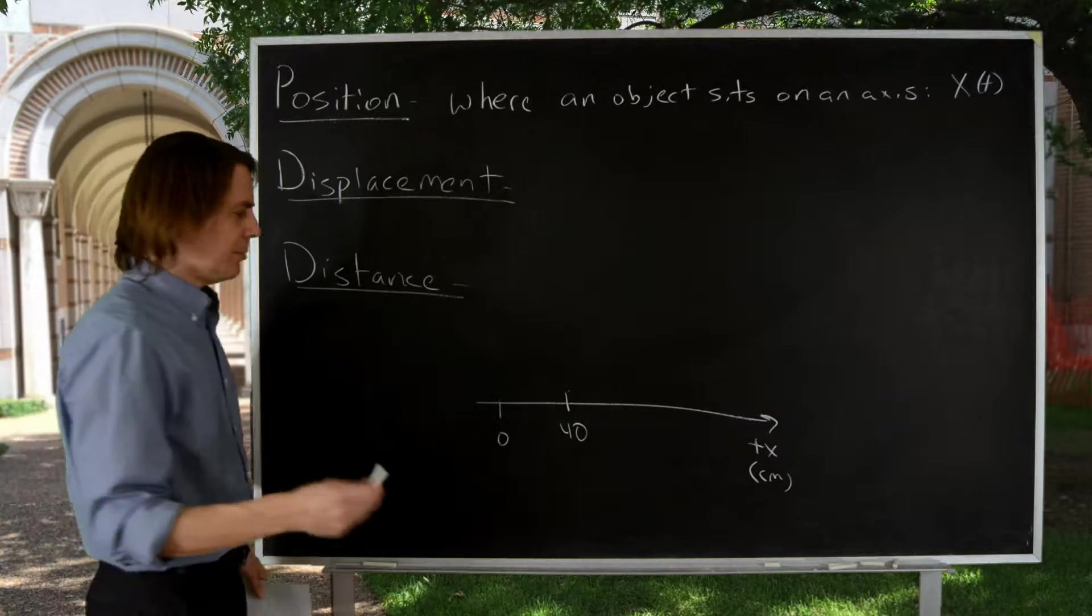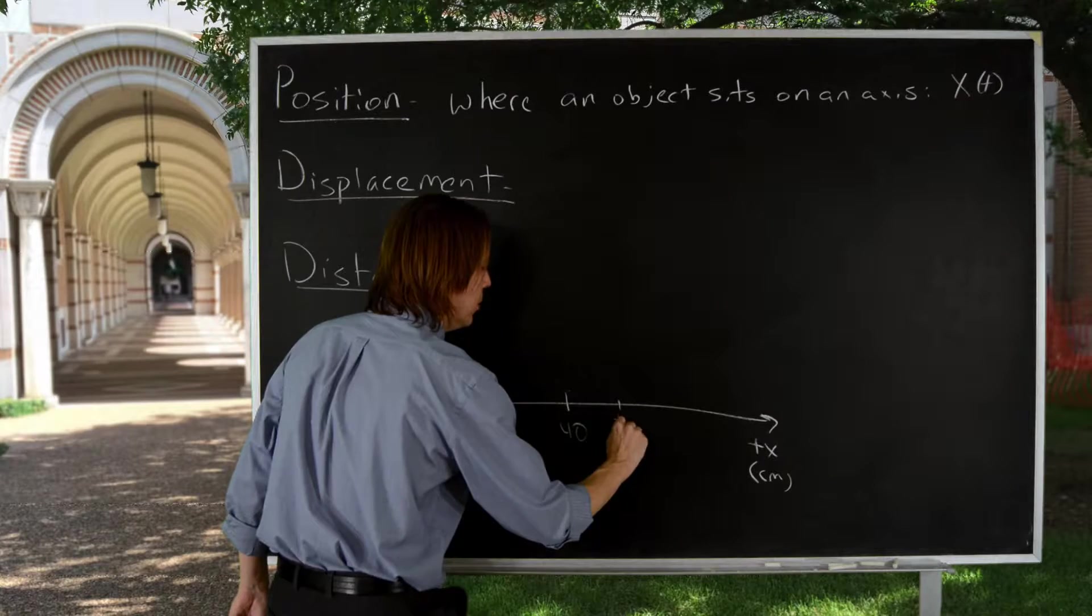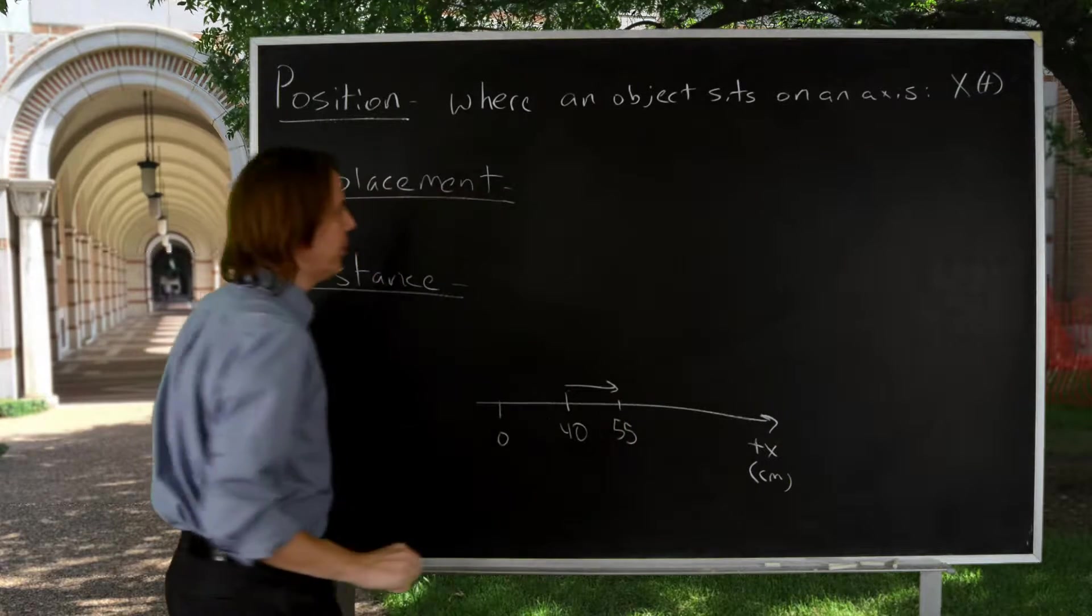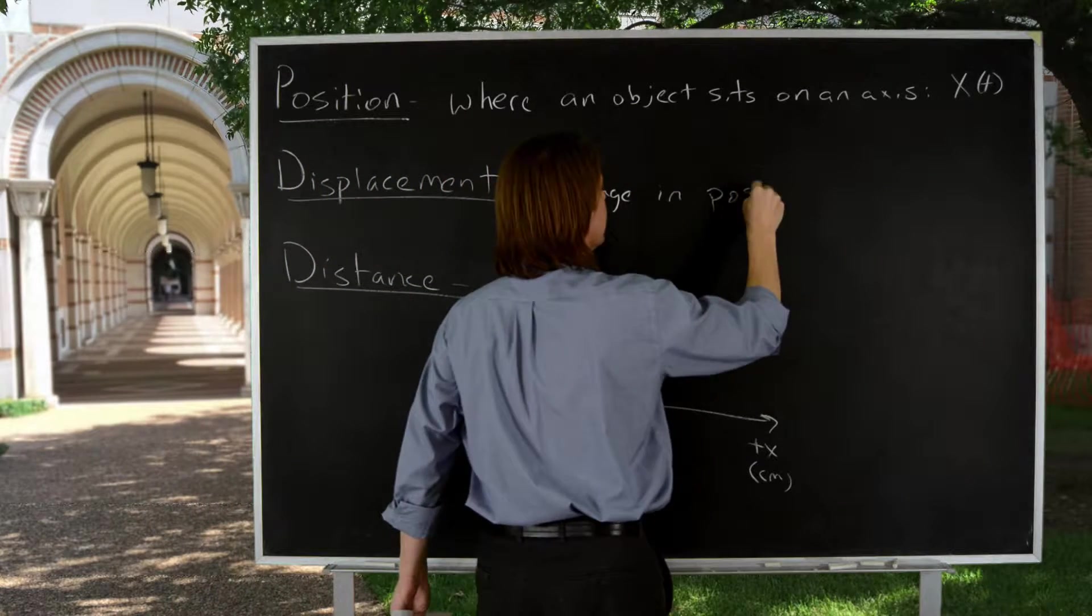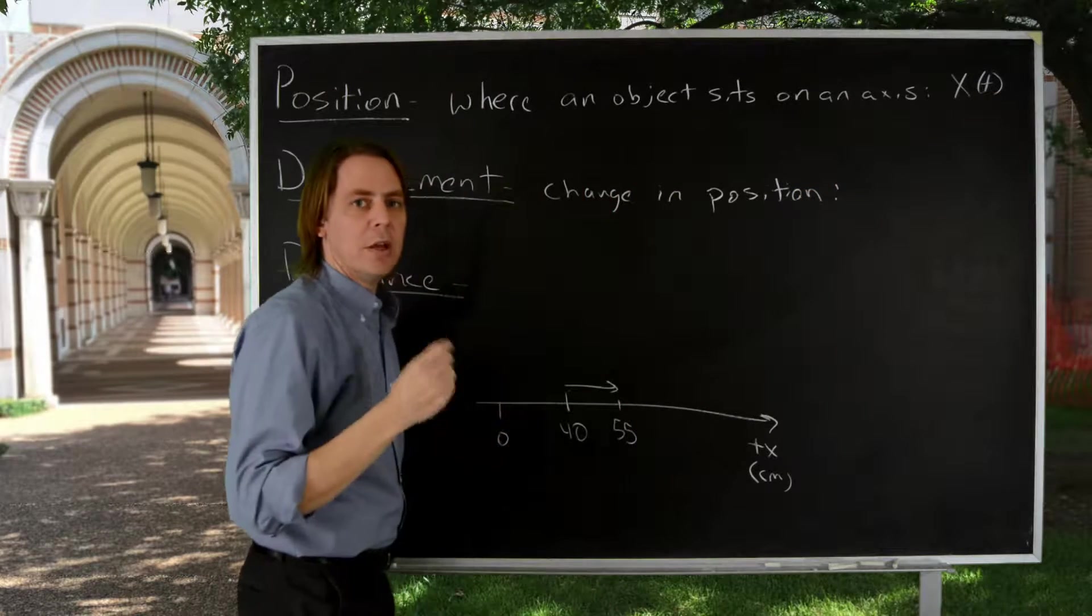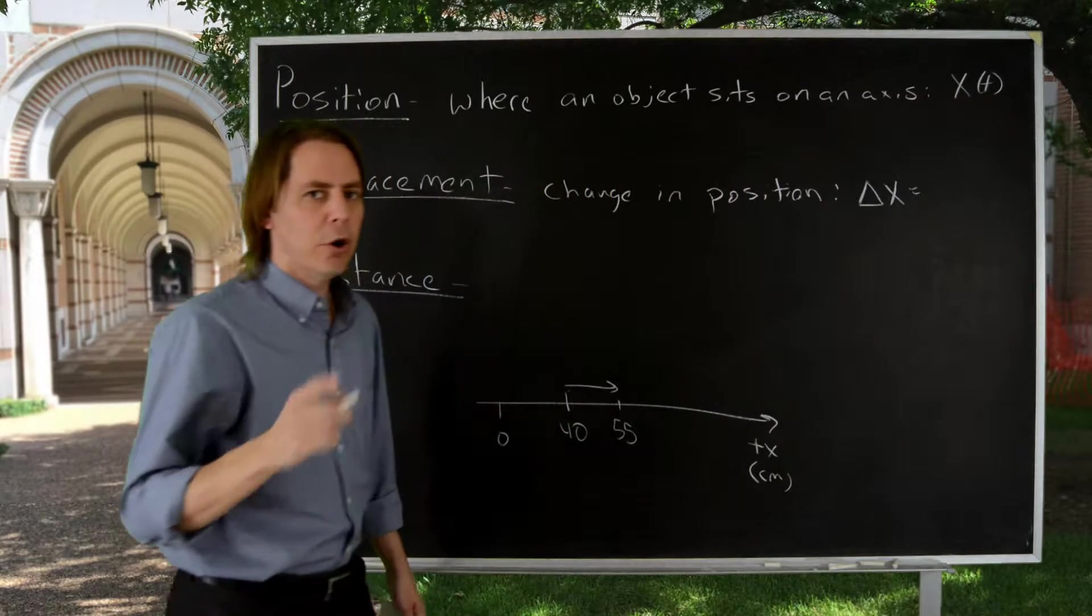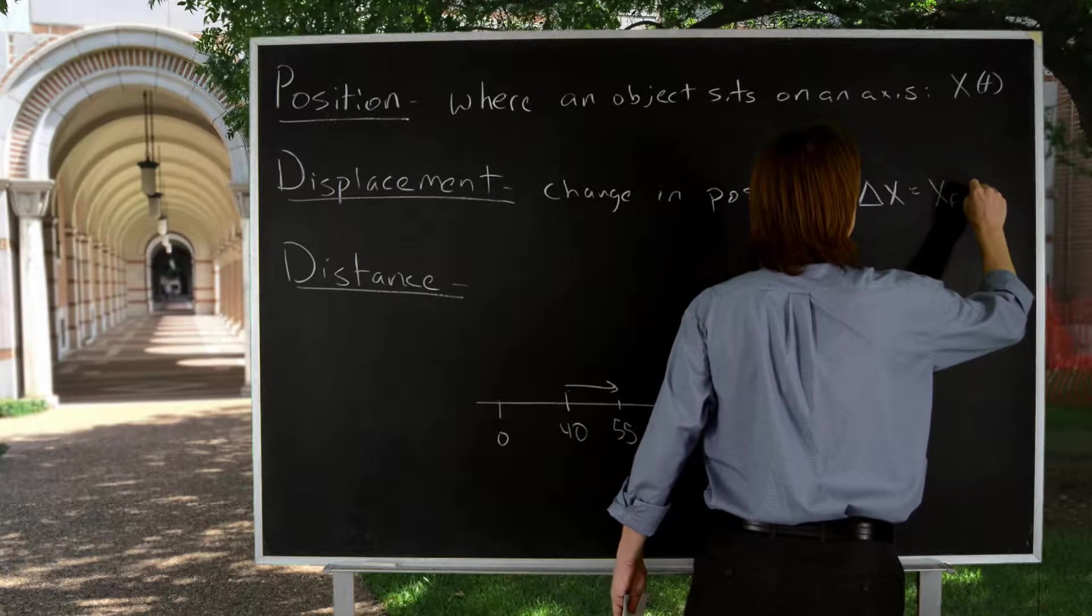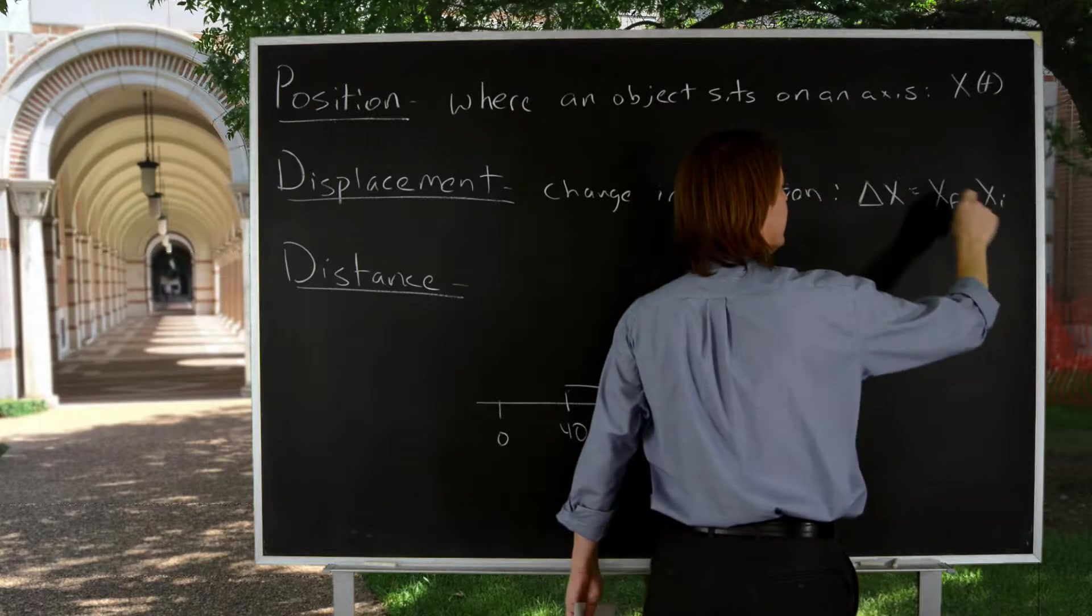Displacement is a change in position. So say the chalk sat at 40 and then moved to 55. You could say it went here, changed to there, a displacement. It's simply a change in position. Since it's a change, we define it as delta x. And in physics, changes are always final minus initial. Don't become a casualty of causality and get that backwards. x position final minus position initial.